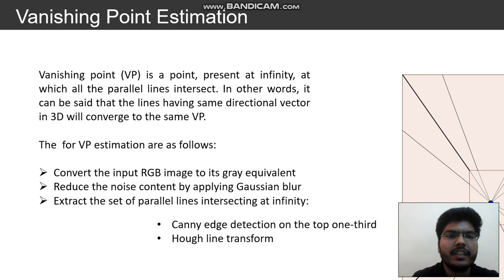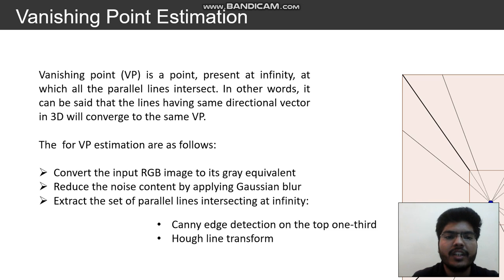The vanishing point is a point at infinity — basically the point where parallel lines intersect or tend to intersect. For vanishing point estimation, the input RGB image is first converted to grayscale, then Gaussian blur is applied to reduce noise. Next, Canny edge detection is applied on the top one-third and the bottom one-third of the image, followed by the Hough line transform to detect the edges.